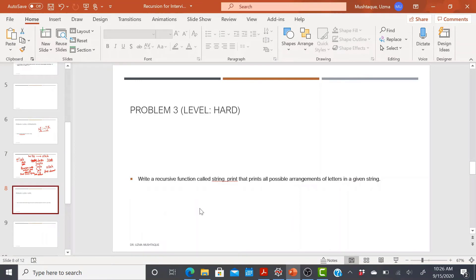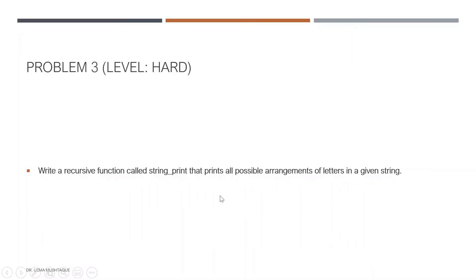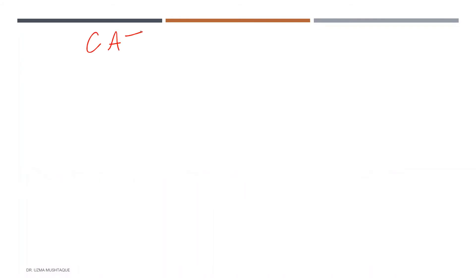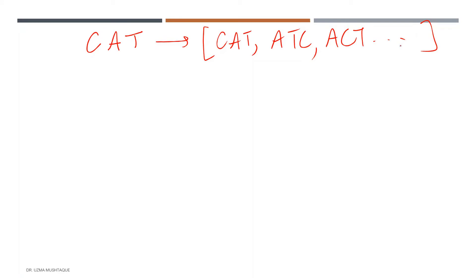Finally, moving on to problem number three, which is slightly harder than the other two. This asks us to write a recursive function called string_print that prints all possible arrangements of letters in a given string — this is a permutation problem. There are many different versions of this, so it's good to ask the interviewer which version they want. Here I'm taking a generic approach. For example, given the string 'cat', return a list of all permutations.